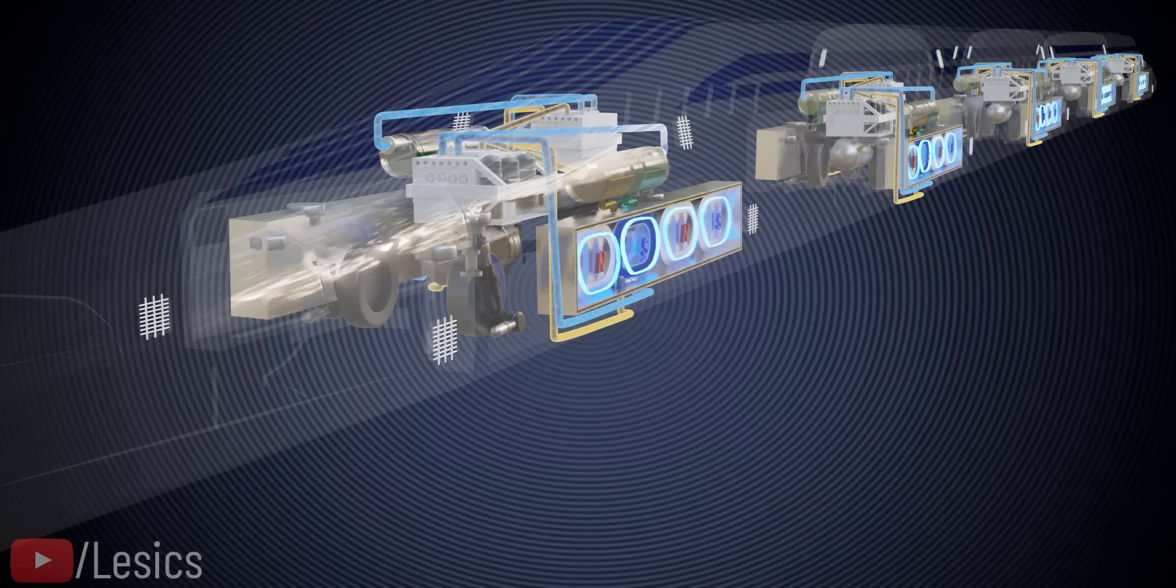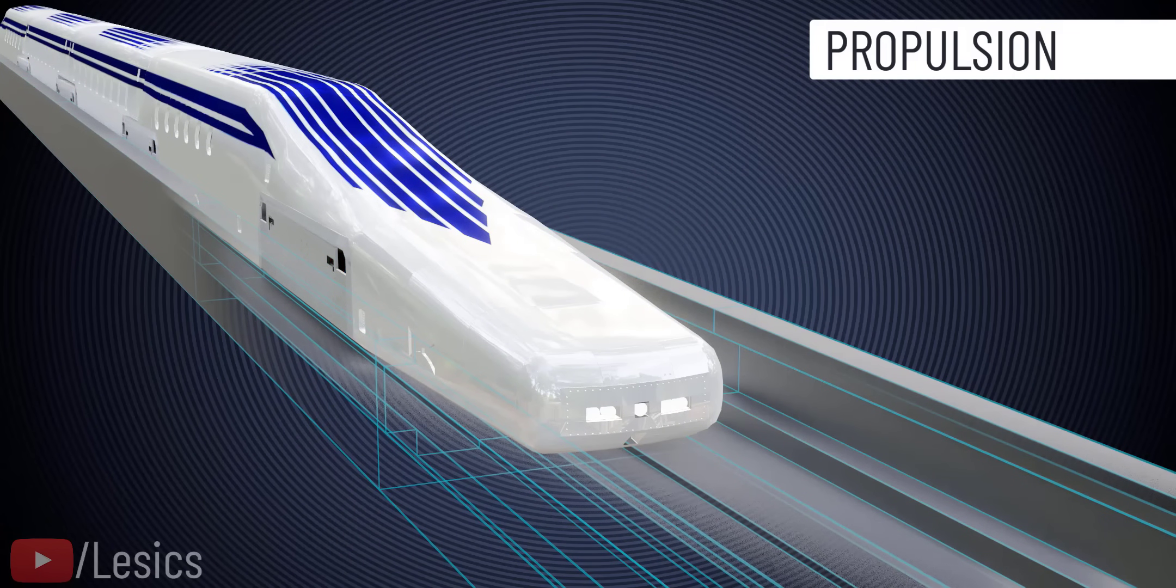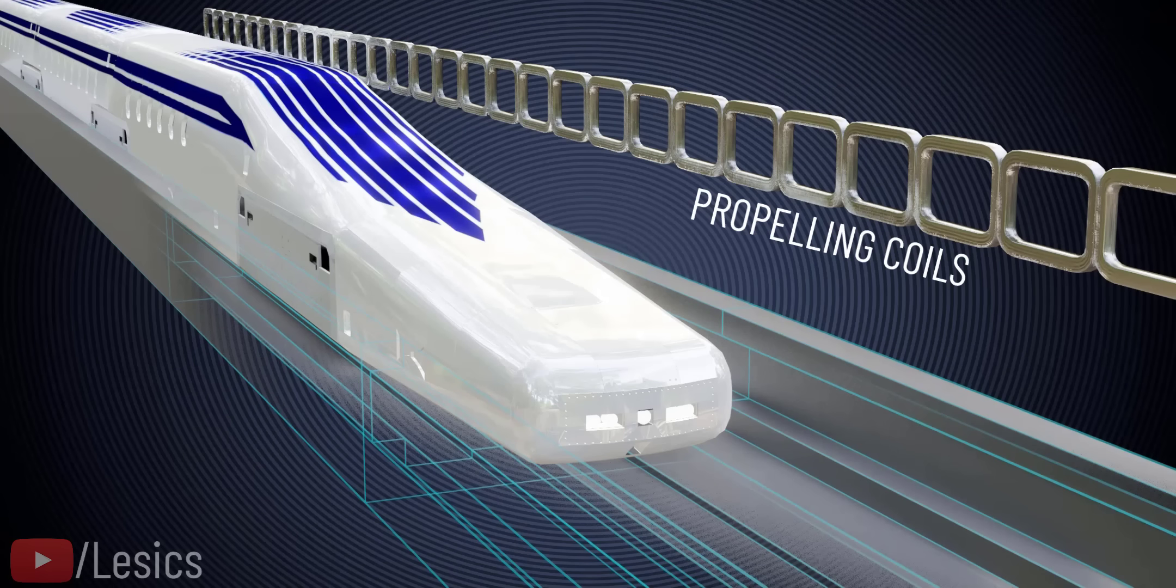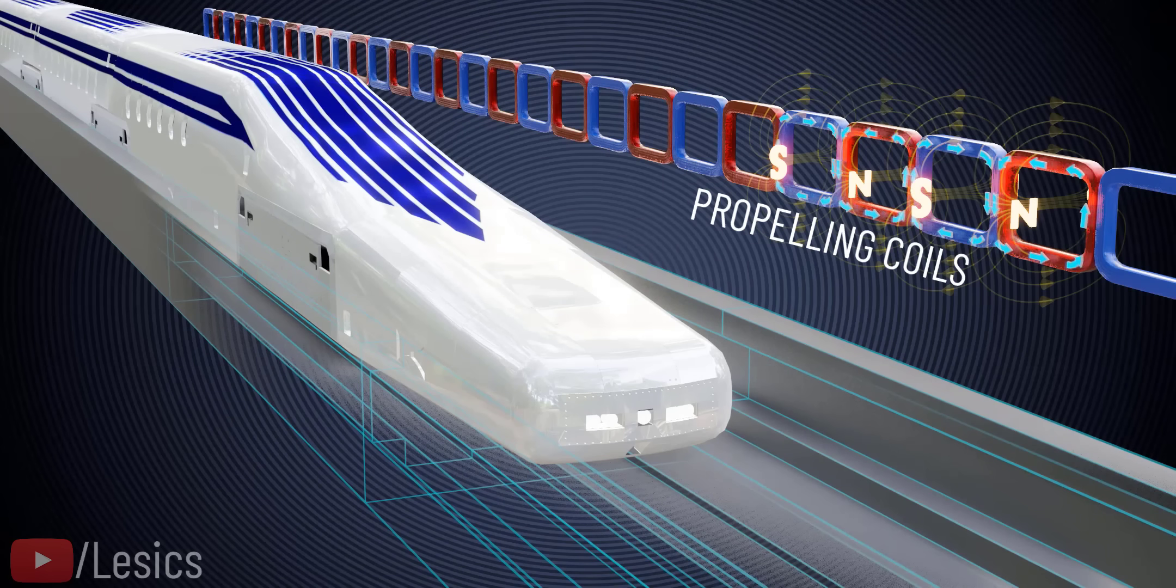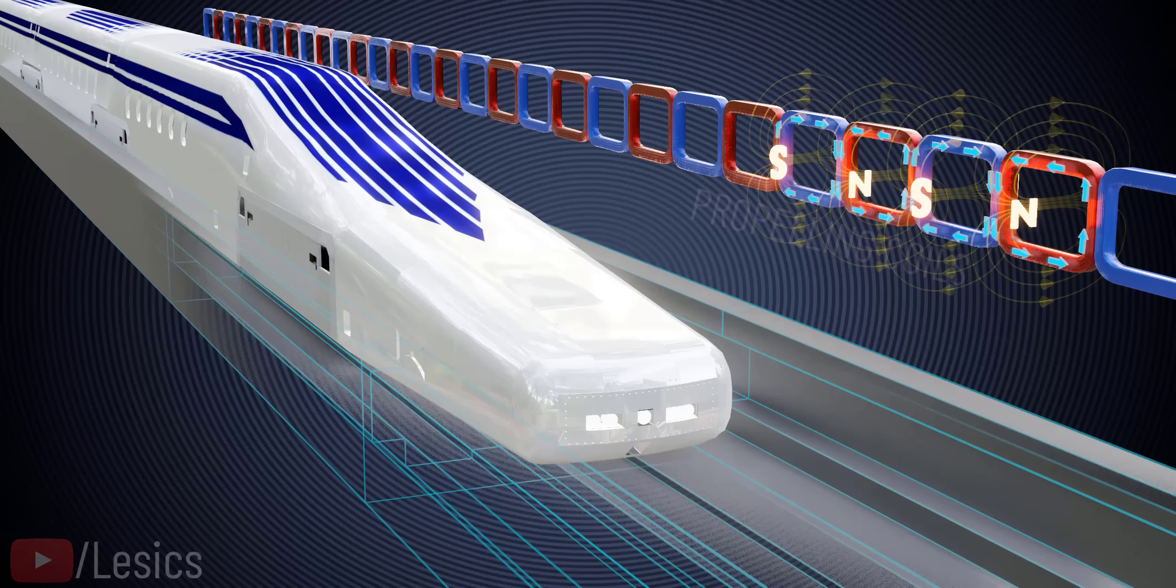As mentioned, the first task is propulsion. Propelling the train forward is an easy task. For this purpose, we use a series of normal electromagnets. They are called propelling coils. The propelling coils are powered in an alternative manner, as shown, and are placed inside a guideway.